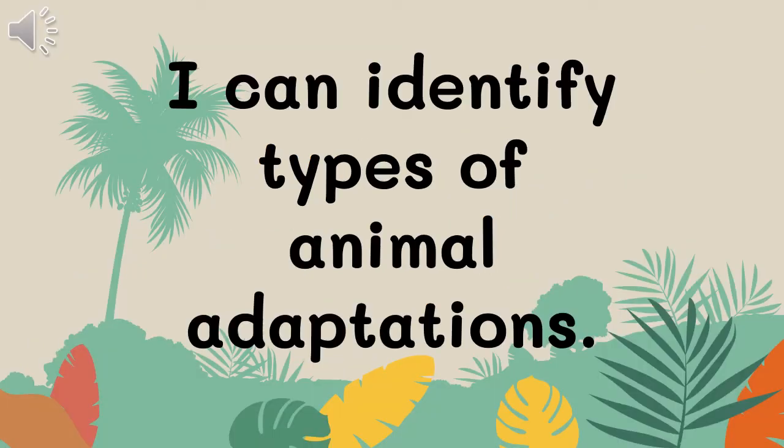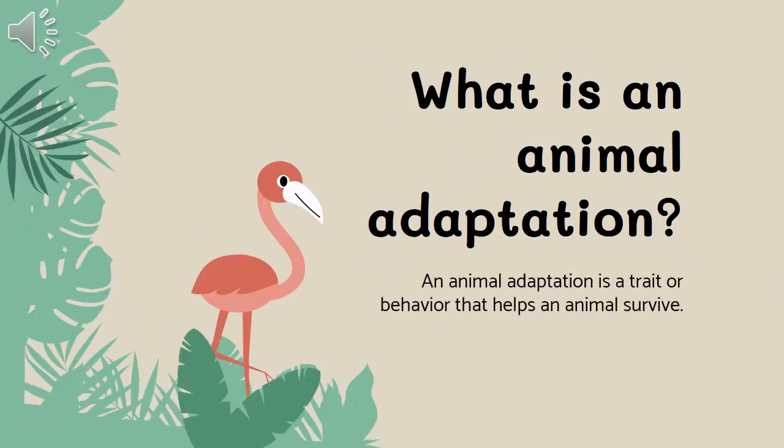Our learning objective for today is: I can identify types of animal adaptations. So let's start with — what is an animal adaptation? An animal adaptation is a trait or behavior that helps an animal survive. There are so many different traits and behaviors specific to different animals that we're not going to be able to cover them all. But basically, if it's something about an animal — a body part or behavior — that's helping them survive, we would call that an adaptation.